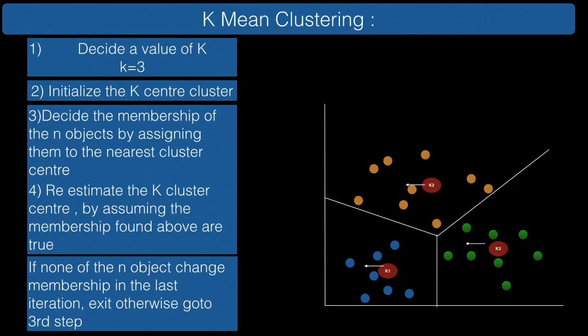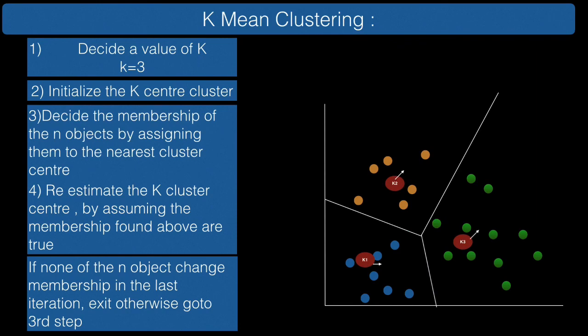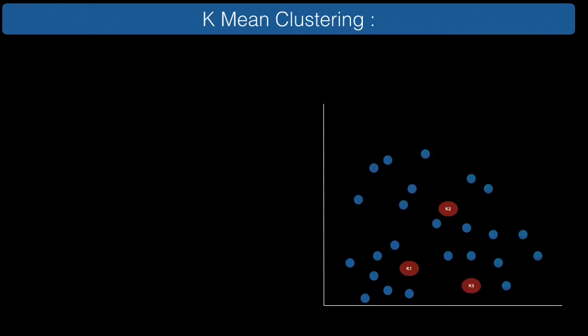This repetition and loop will end when after we change the position of these k center clusters, the objects don't change their membership. That means we have found the correct groups—we've divided them into correct groups. That's what k-means clustering means. We have unlabeled dataset and after applying k-means clustering we can divide them properly.